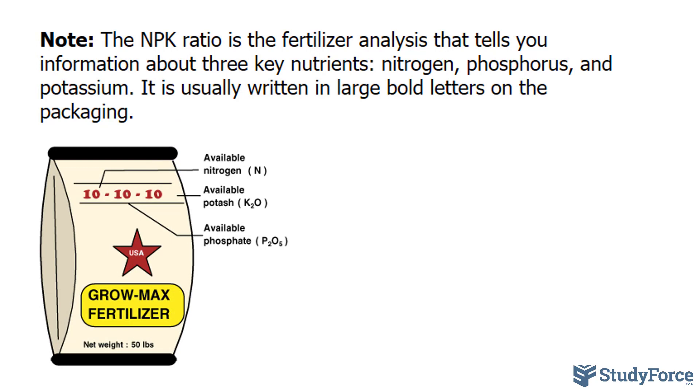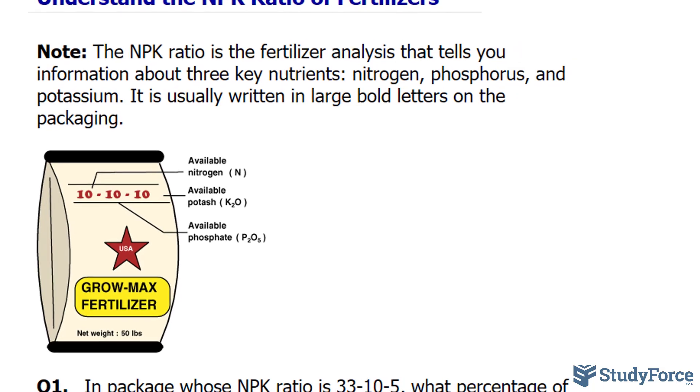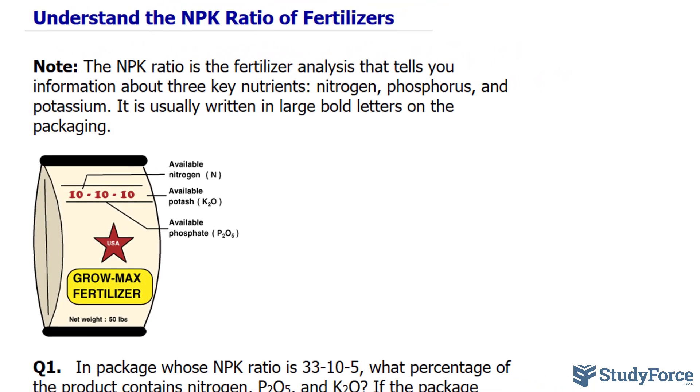One common error people make regarding this ratio is misinterpreting the P for elemental phosphorus rather than P2O5, and K for potassium instead of K2O. So, when asked for the percentage of elemental phosphorus or potassium, you're actually required to perform two separate calculations, which I'll show you later on in an example. With that being said, let's take a look at an example.